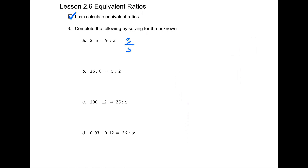3 to 5 can be placed into a fraction form of 3 over 5, and we're saying that equals 9 over x. You should be able to see that 3 times 3 is equal to 9, so multiply the bottom by 3 and get 15. But show me what you're doing. The better way is cross-multiplication: 3 times x is 3x, and 5 times 9 equals 45. So 3x equals 45. Dividing both sides by 3 gives x equals 15.